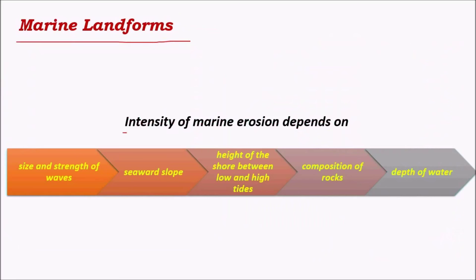The next ones are marine landforms. The intensity of marine erosion depends on various factors such as the size and strength of waves — waves are much higher in the southern hemisphere compared to the northern hemisphere because of less land mass, which facilitates wind flow at high velocities. The seaward slope, height of the shore between low and high tides, composition of rocks and soils around the sea, and depth of water facilitating ocean currents also play major roles in marine erosion.